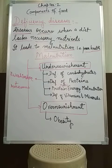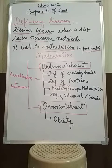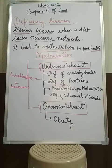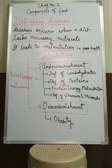The last topic is over-nourishment, which is the condition in which consumption of excess nutrients of one or more kinds occurs. If there is an excess amount of fat in your body, the blood will not flow properly, leading to obesity. Accumulation of excess fat in the body due to overeating is called obesity.